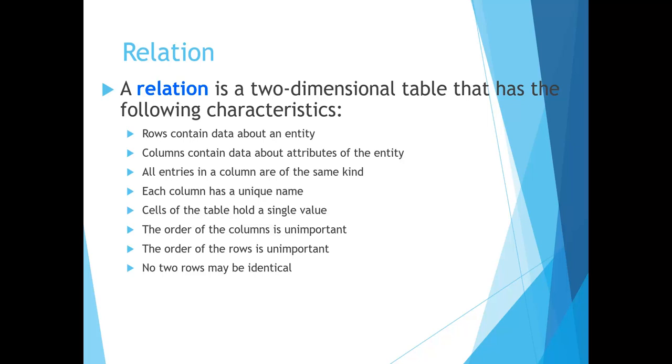So a relation is a two-dimensional table that has the following characteristics. It has rows that contain data about an entity. It has columns that contain data about attributes of that entity that describe that entity. All entries in a column are of the same kind. For example, all entries under zip code will be only for zip code values. No other values can be listed under zip code. In other words, phone numbers cannot be listed under the column zip code. Each one of these attributes or columns has a unique name and should not be repeated in the same relation.